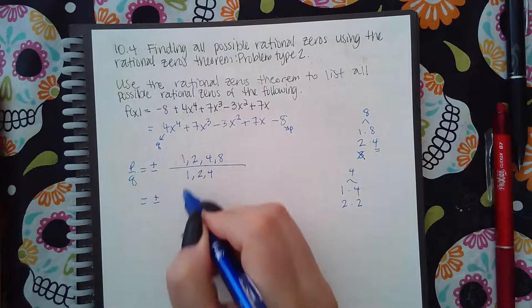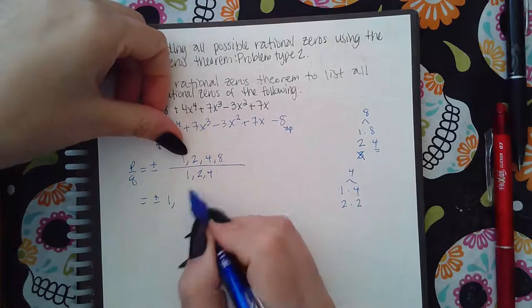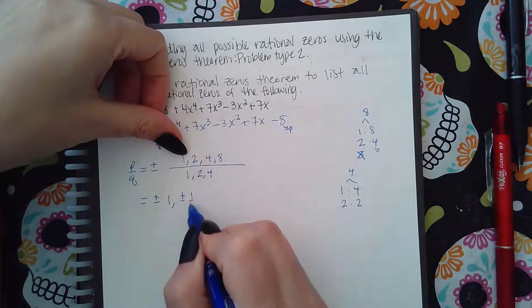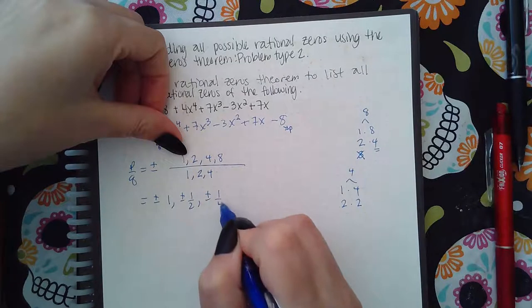So we have 1 over 1 which is 1. 1 over 2 which is 1 half. 1 over 4 which is 1 fourth.